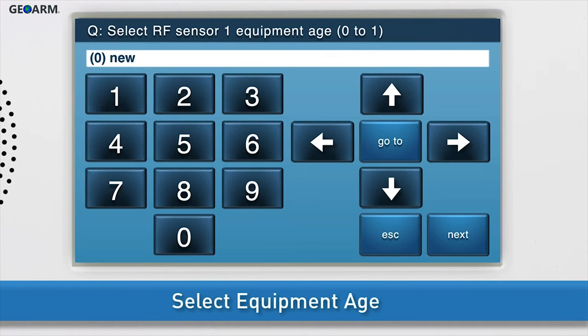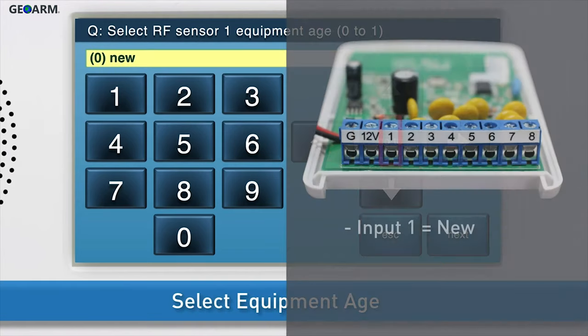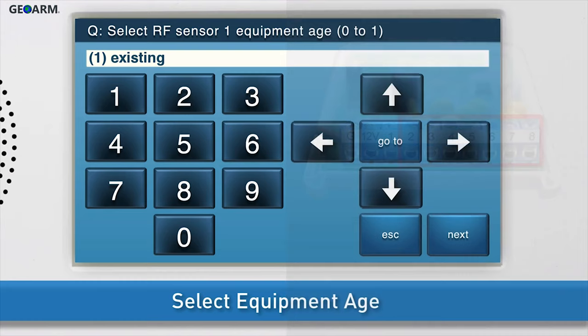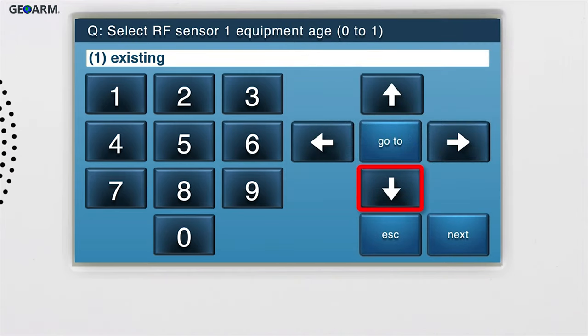Select the equipment age. It is recommended to program input terminal 1 as new, and input terminals 2 through 8 as existing. Press the down arrow to go to the next sub-question.